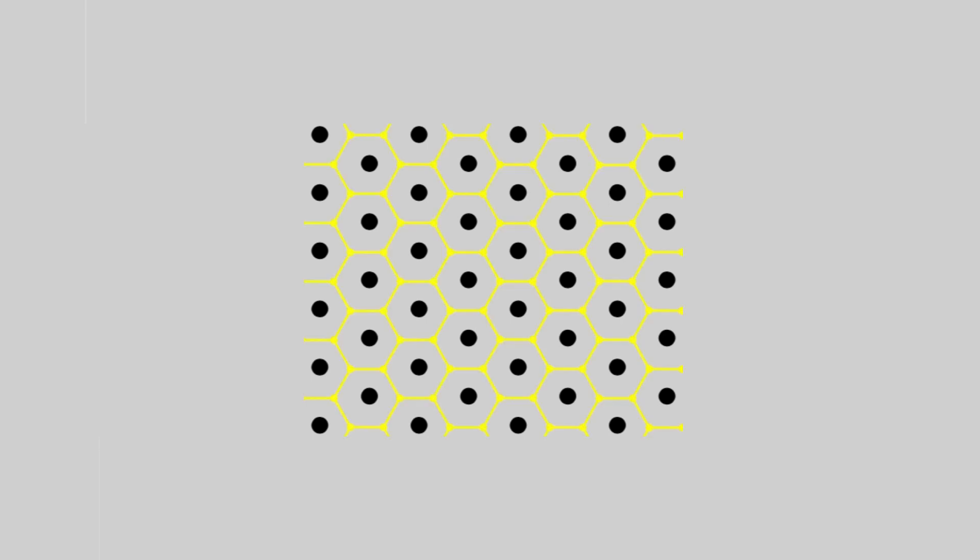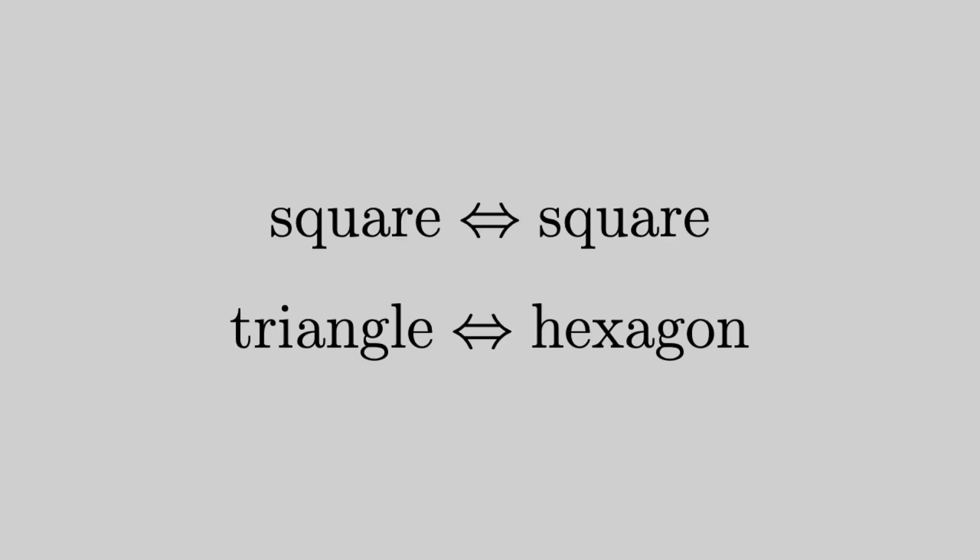And then if you started with the hexagonal lattice, you would get back to a triangular lattice. So it just so happens that a square lattice, when you try to draw the boundaries between sites, you get another square lattice.